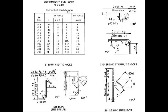For a 90-degree bend, this distance would be eight inches, and three inches for the half-inch rebar.